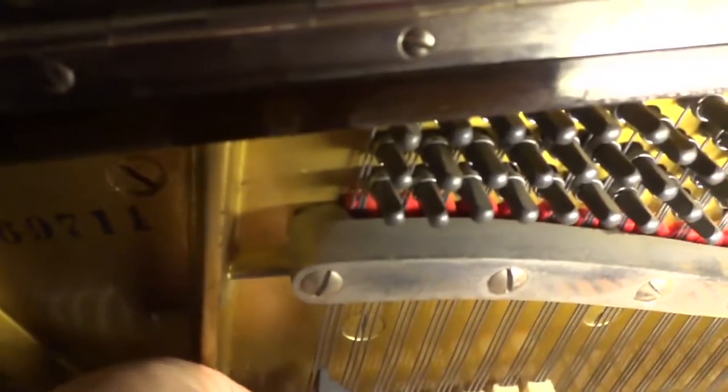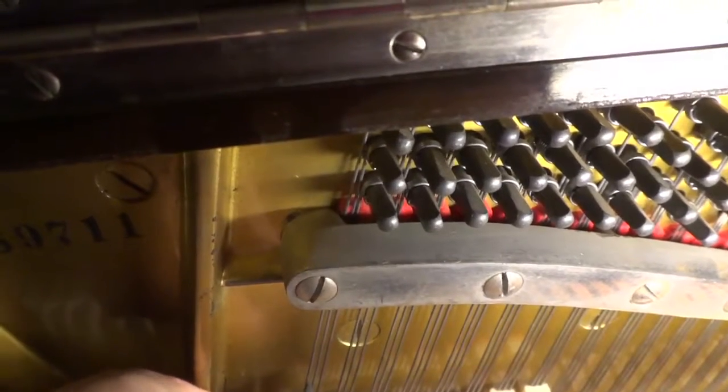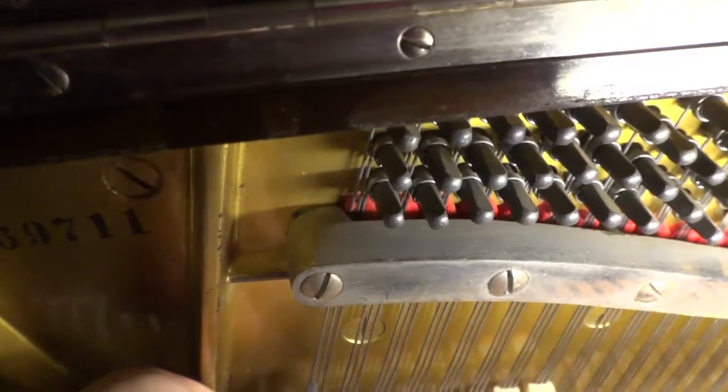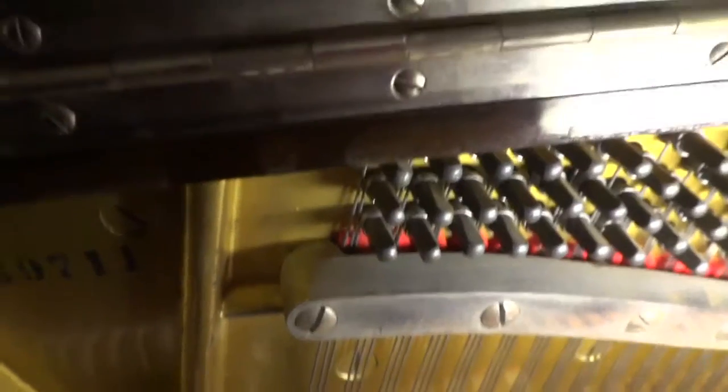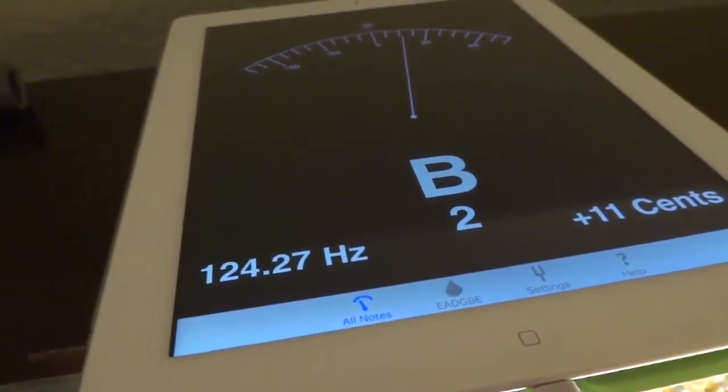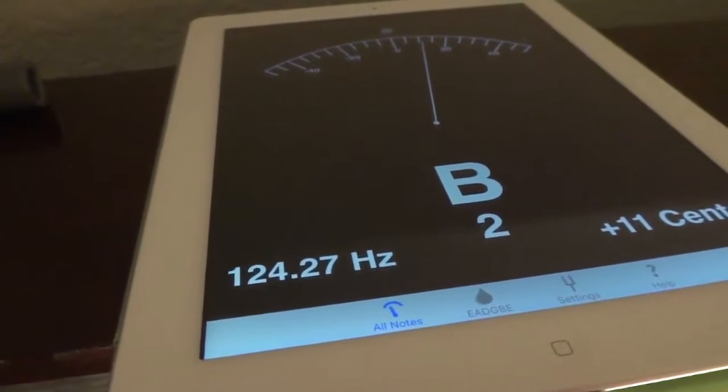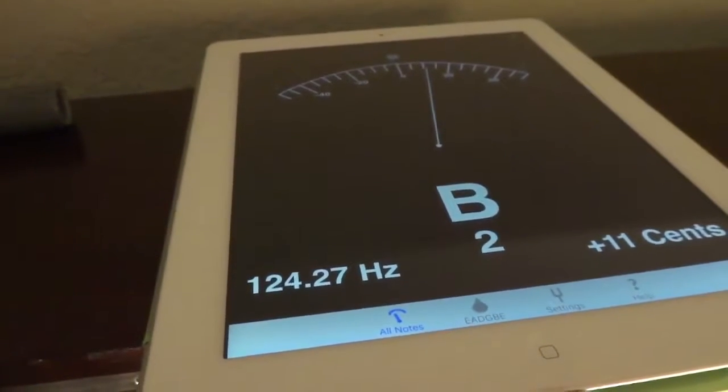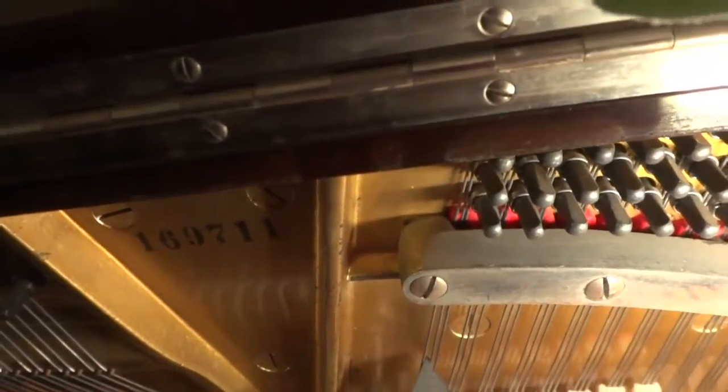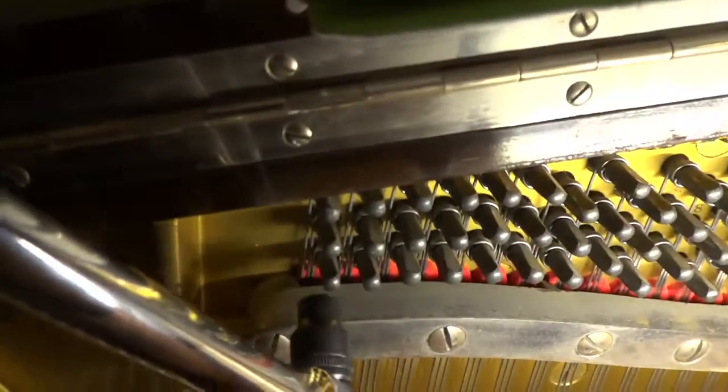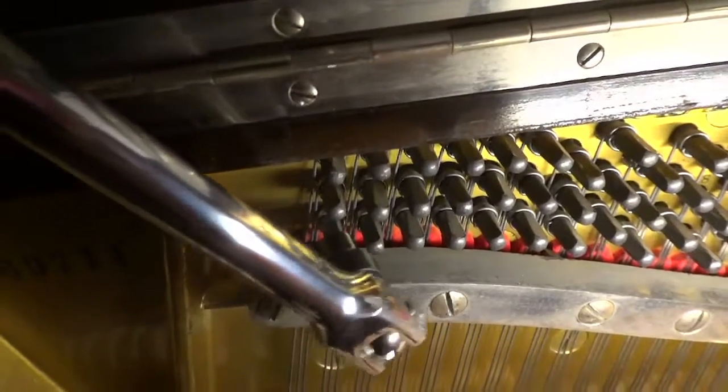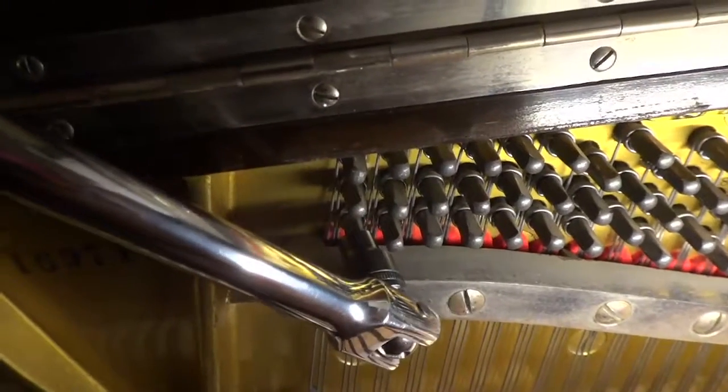Okay, then tune the right string. So mute the left and the center. Insert a new mute between those two strings. And check the reading. Wow, it's plus eleven. That's really way up. So tune it down. So that will be the bottom pin of the three pin group for this note, three string note.